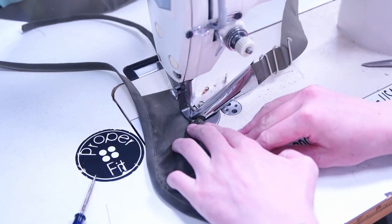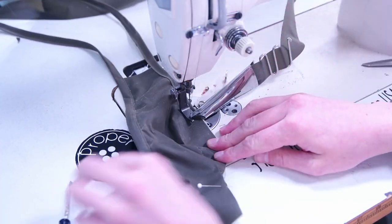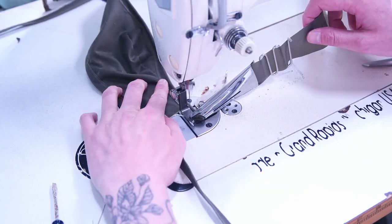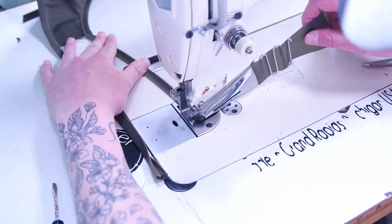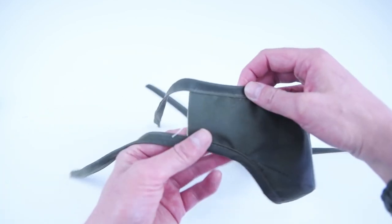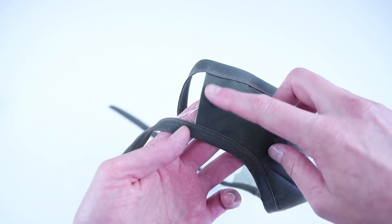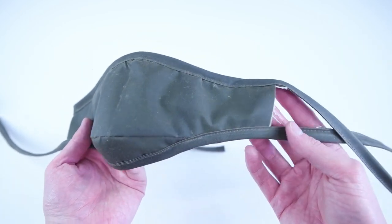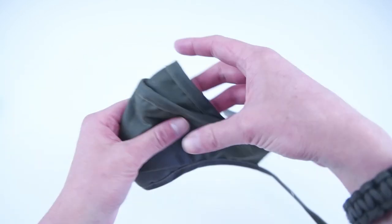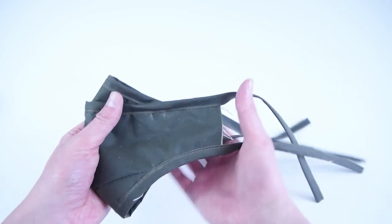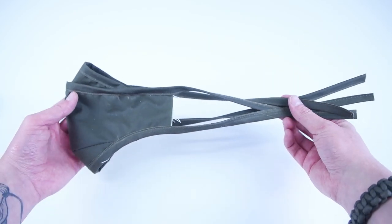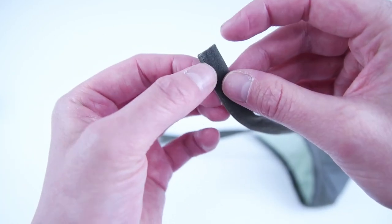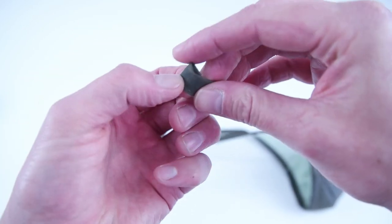And then go ahead and repeat the process for the other edge. If you choose this method, I recommend serging or bias taping the raw edges on the side. I think this is a quick and easy solution if you can't seem to find cord or elastic. To finish off the ties, all you have to do is roll over the edge twice and add a tack stitch.